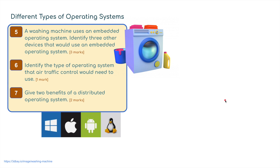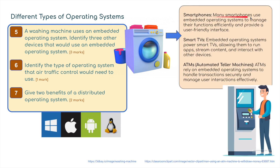Different types of operating systems. A washing machine uses an embedded operating system - identify three other devices that would use an embedded operating system. Smartphones use embedded operating systems to manage their functions efficiently and provide user-friendly interfaces. A smart TV also has an embedded operating system, allowing it to run apps, stream content, and interact with other devices - smart basically means it connects to the internet, so things like Netflix and Amazon Prime. ATMs rely on embedded operating systems to handle transactions securely and manage user interactions effectively.